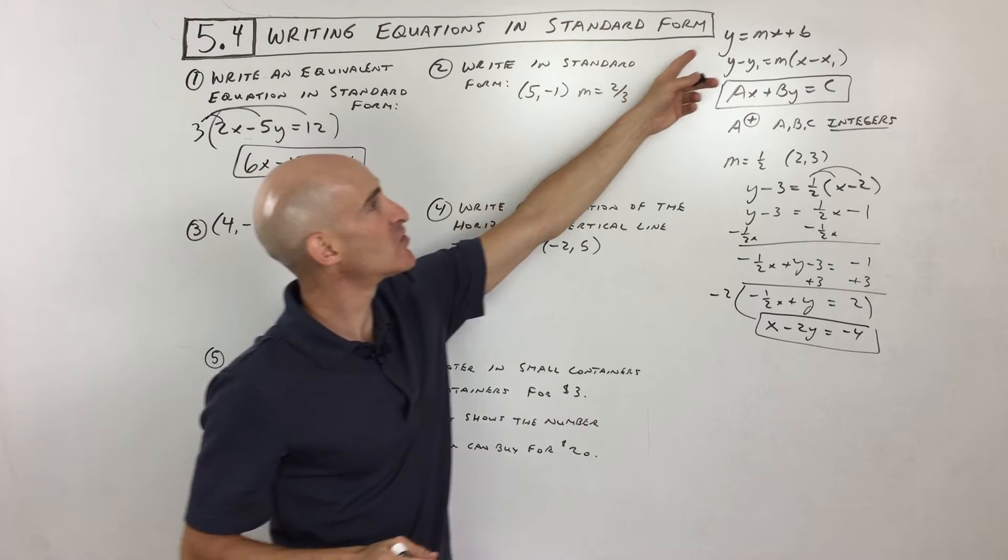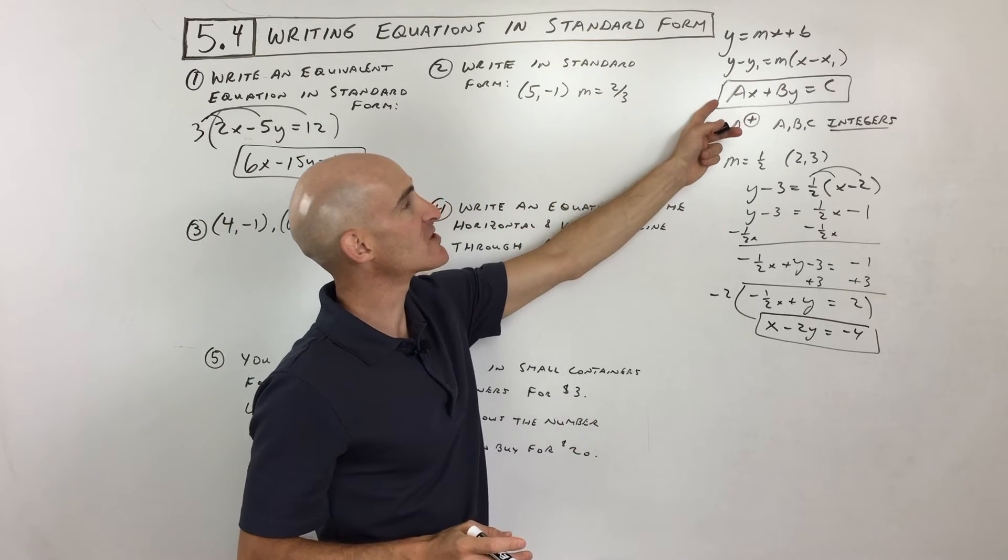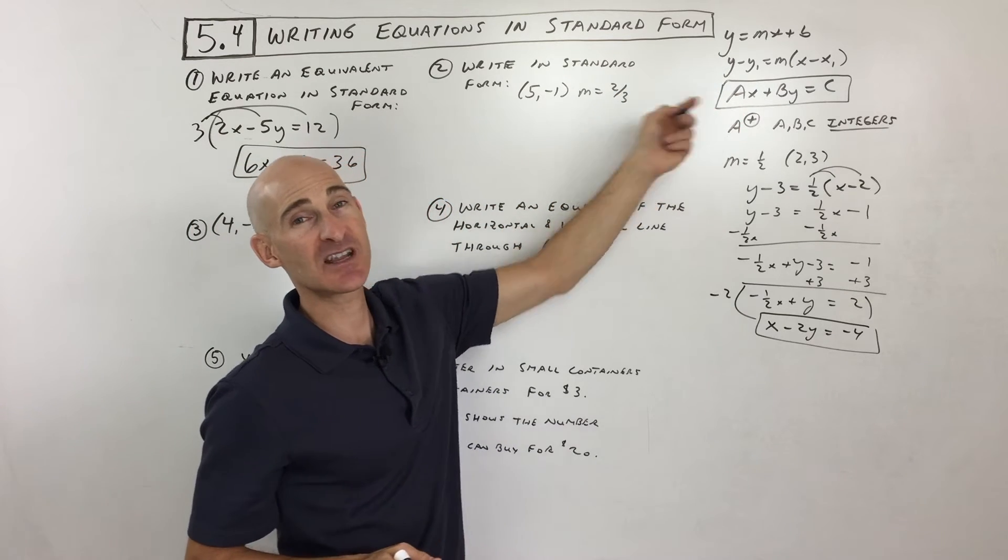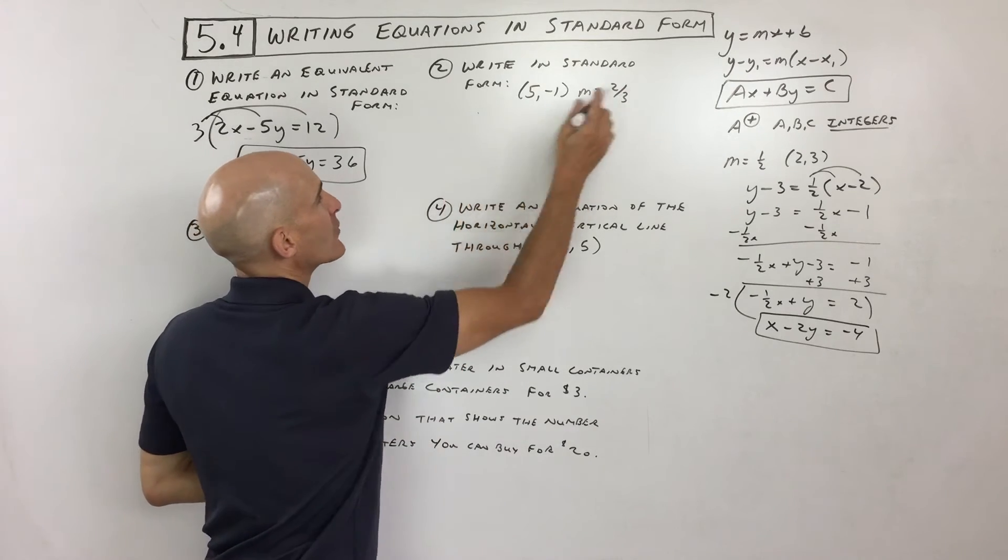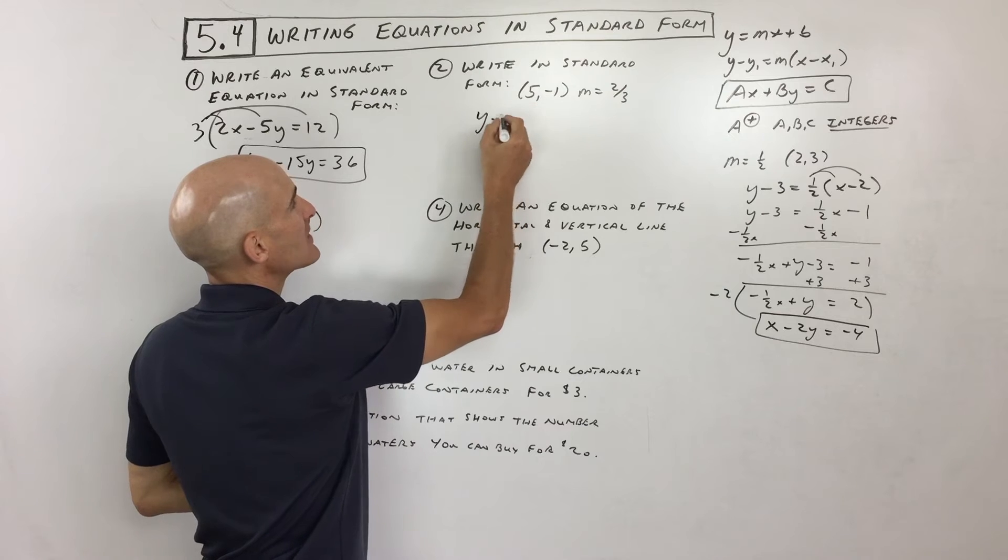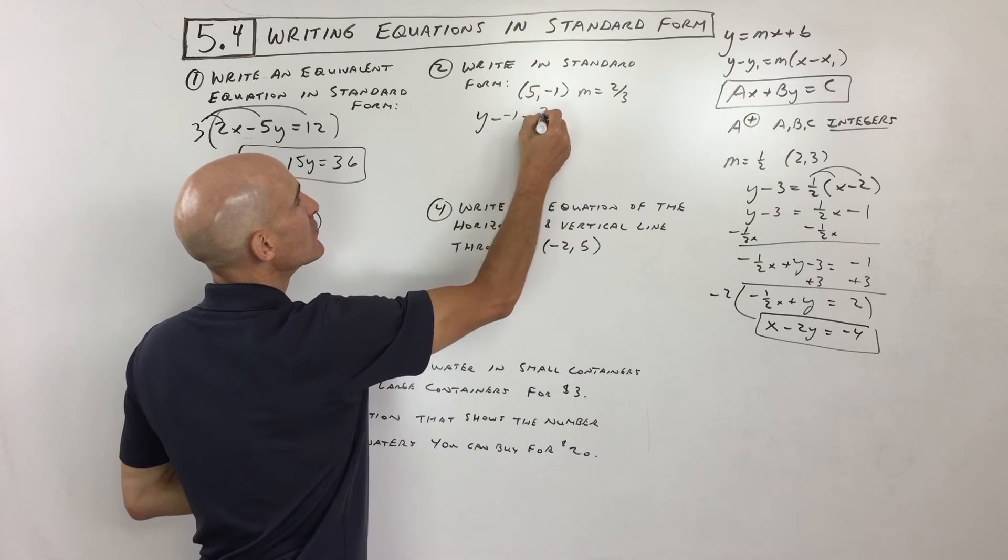So do we start with the slope intercept, point slope, or standard form? And we want to eventually end up in standard form. What do you think? See if you can do this one on your own. Well, if I was going to do it, I'd start off with the point slope form. So I'd do y minus negative 1 equals the slope, which is 2 thirds times x minus x1.